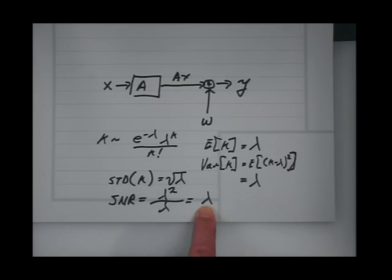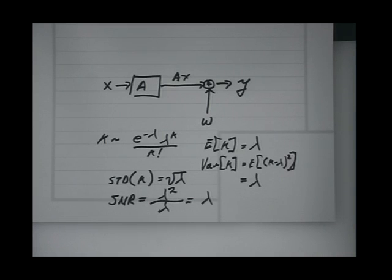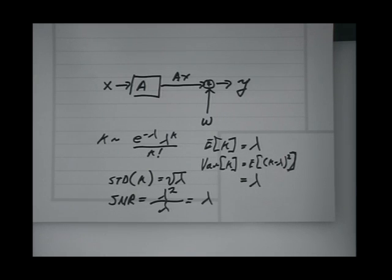It's a little counter-intuitive. If you have a really strong optical signal into a photon-counting detector, the noise goes up — not down. But the signal-to-noise ratio goes up too, because the signal energy goes up faster than the noise energy.